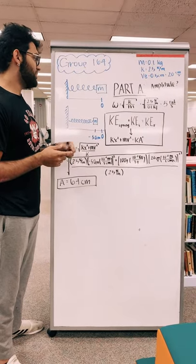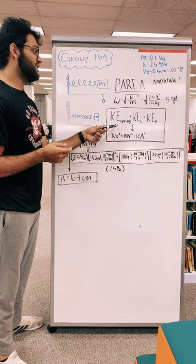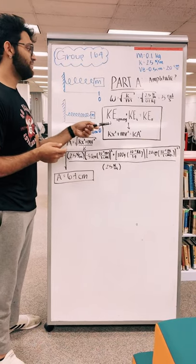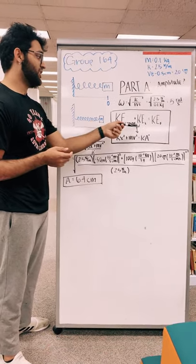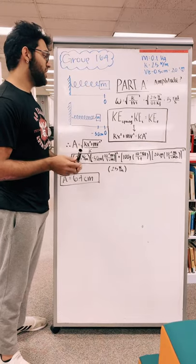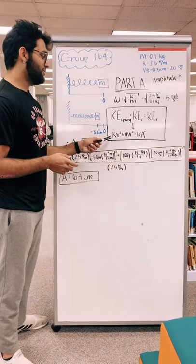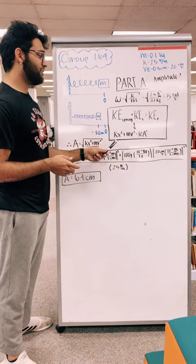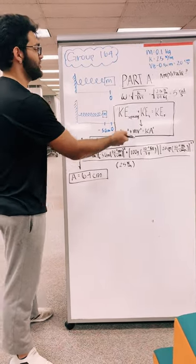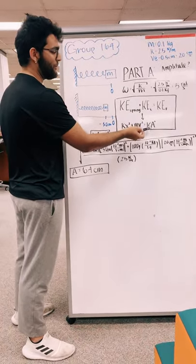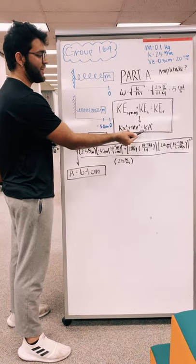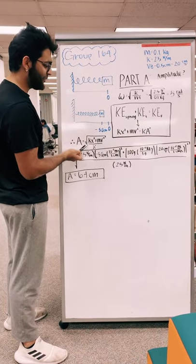To find the amplitude we use this equation right here, which is the kinetic energy of the spring plus the initial kinetic energy equals the final kinetic energy. From here we cancel out the halves because they're common in all three terms, and from here we solve for A by dividing all these terms by k and then taking the square root, which is exactly what we did over here.